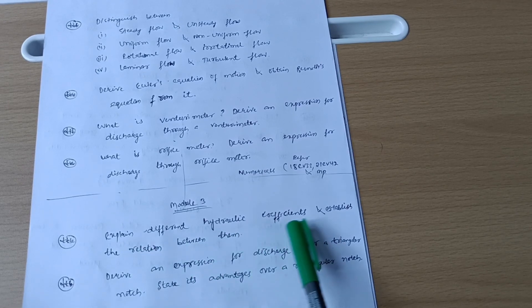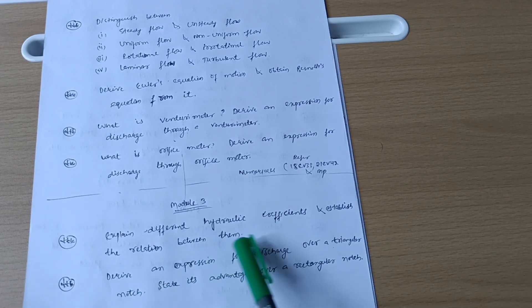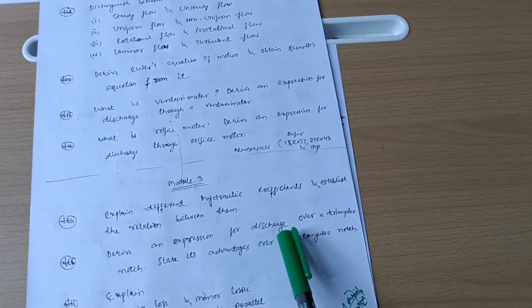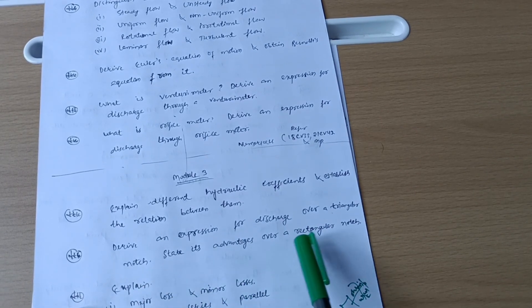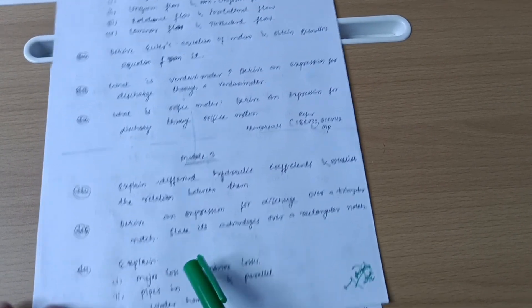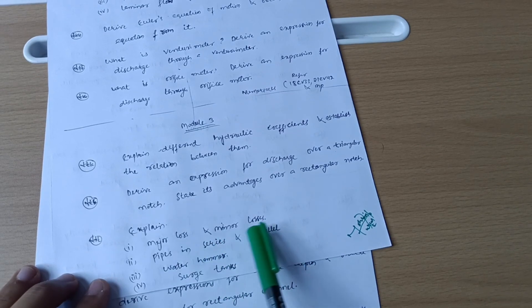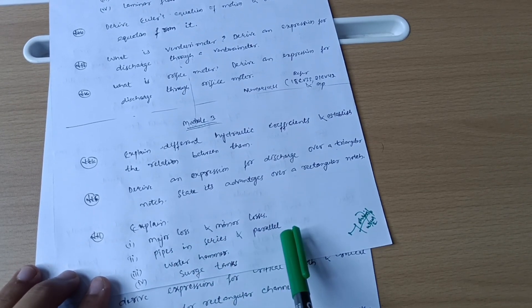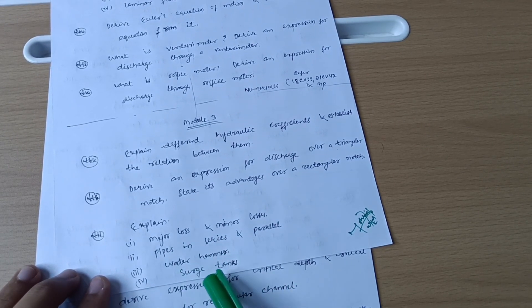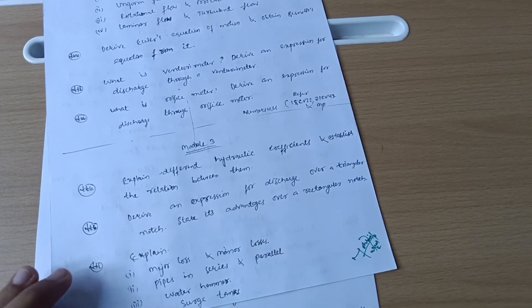Next is Model 3. Explain different hydraulic coefficients and establish the relationship between them. Derive an expression for discharge over a triangular notch, state its advantage over a rectangular notch. Explain major loss and minor losses, pipes in series and parallel, and water hammer and surge tanks. You have to write down short notes on it.